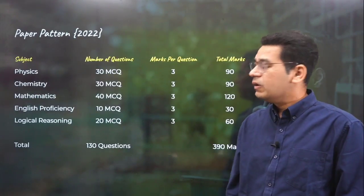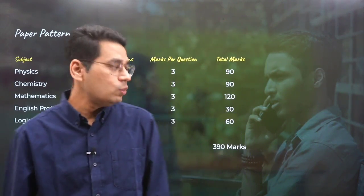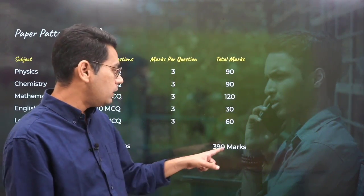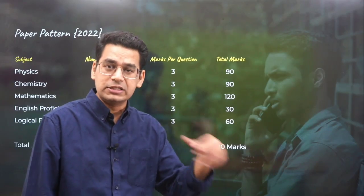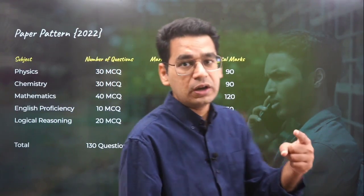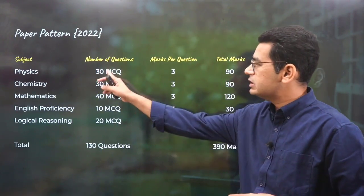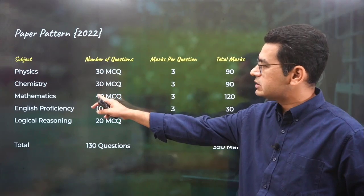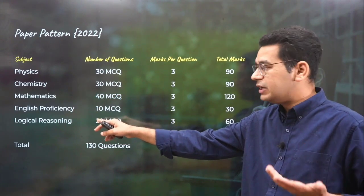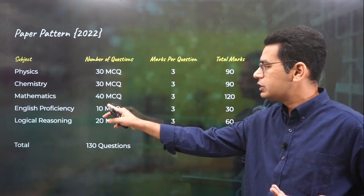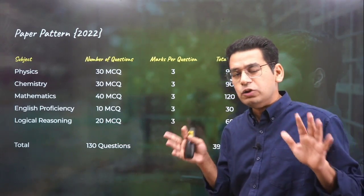There is a pattern change in 2022 where the paper will comprise 390 marks as opposed to 450 marks earlier. The new composition is 30 physics, 30 chemistry, 40 mathematics, and logical reasoning given more weightage compared to English — 10 and 20 questions respectively. This is the new pattern.